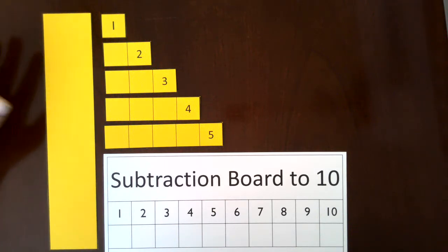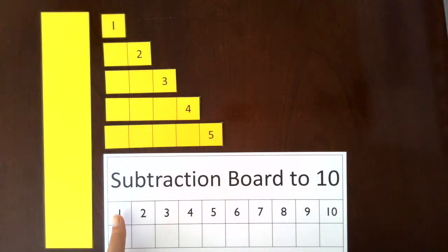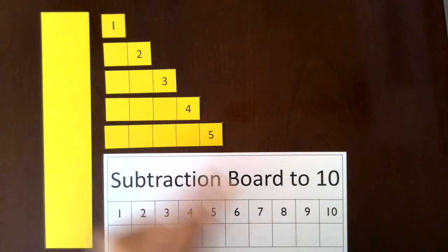So this is a simplified version. There's a board in this case that goes all the way up to 10, but you can really use any number line that goes all the way up to 19.